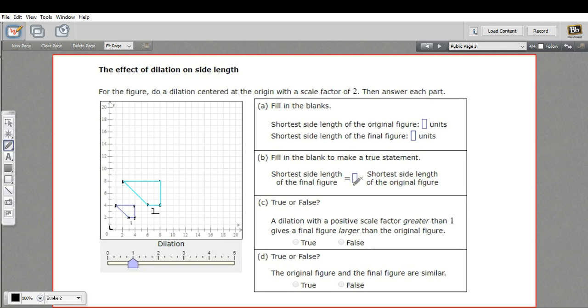Fill in the blank to make a true statement: the shortest side length of the final figure equals something times the shortest side length of the original figure. Well, you multiply it by two. One times two is two. So just as we multiply the coordinates by two, side lengths are all twice as big as each other. You see this one is two long, its corresponding side is four long.